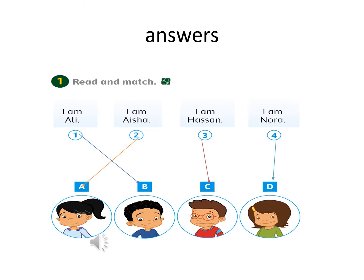Read and match. I am Ali — excellent, it's picture B. Number 2 — I am Aisha — perfect, it's picture A. I am Hasan — excellent, it's picture C.